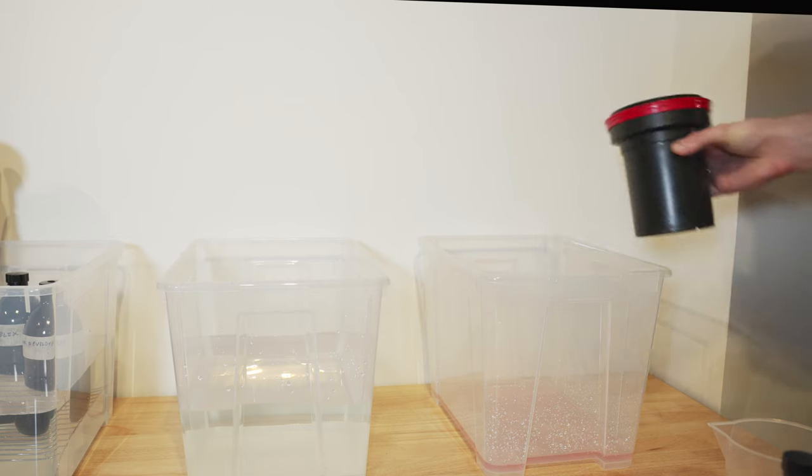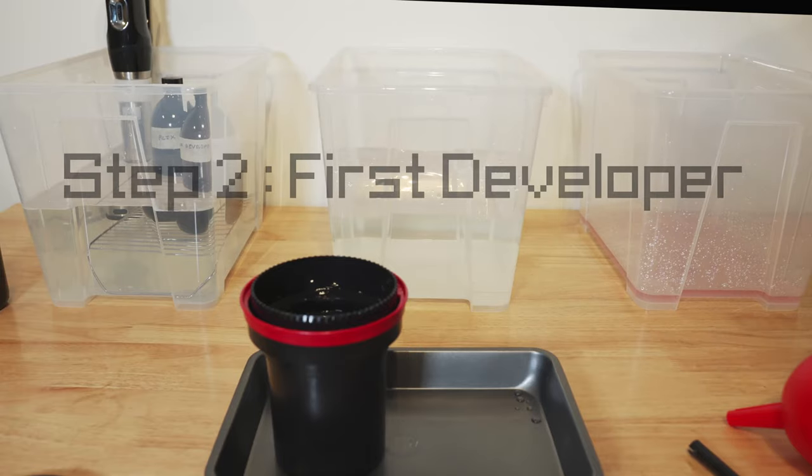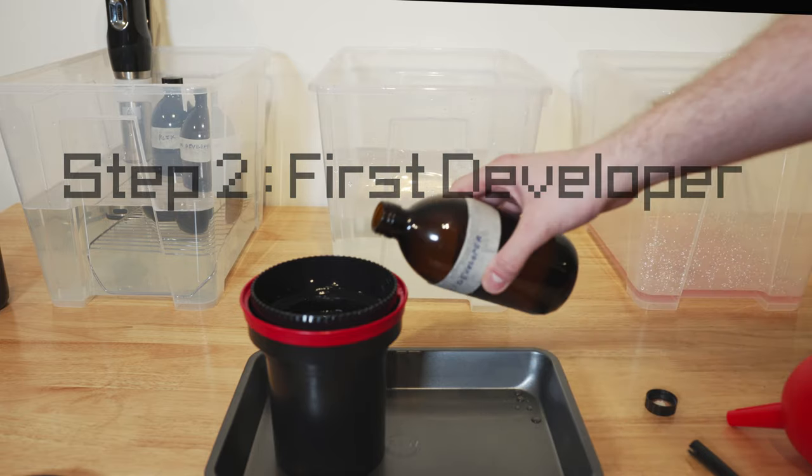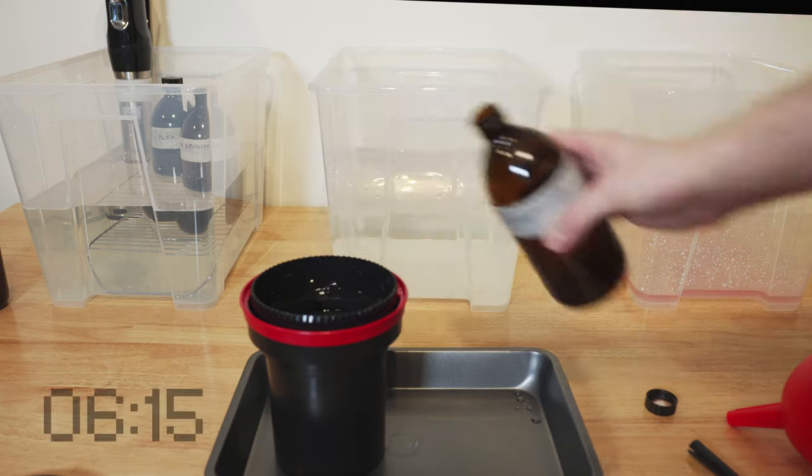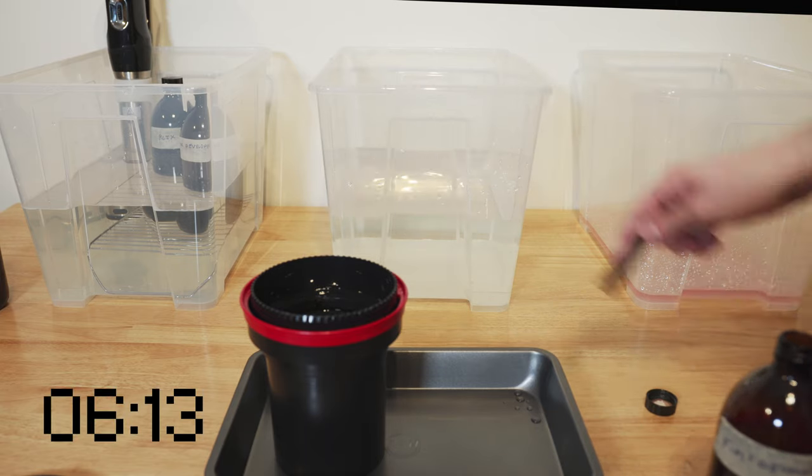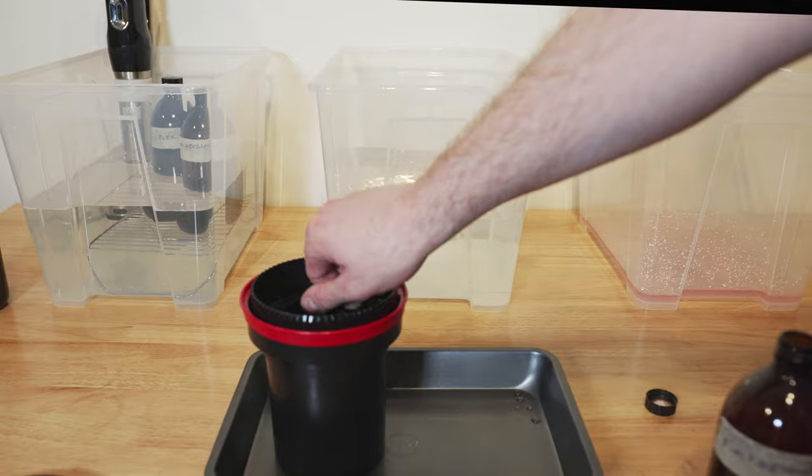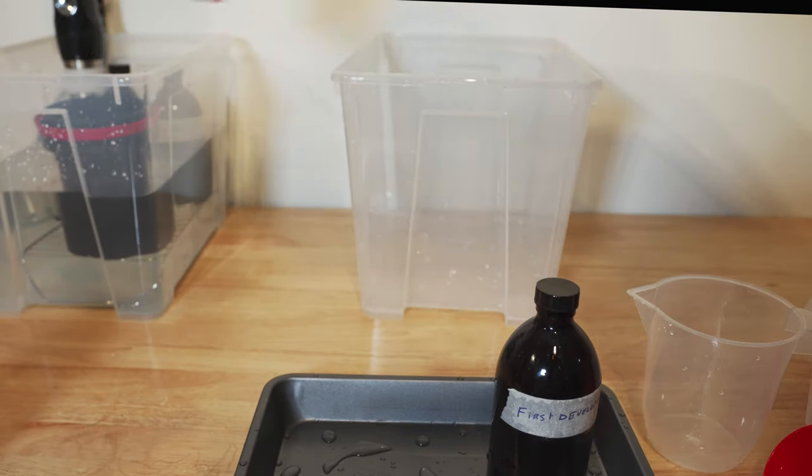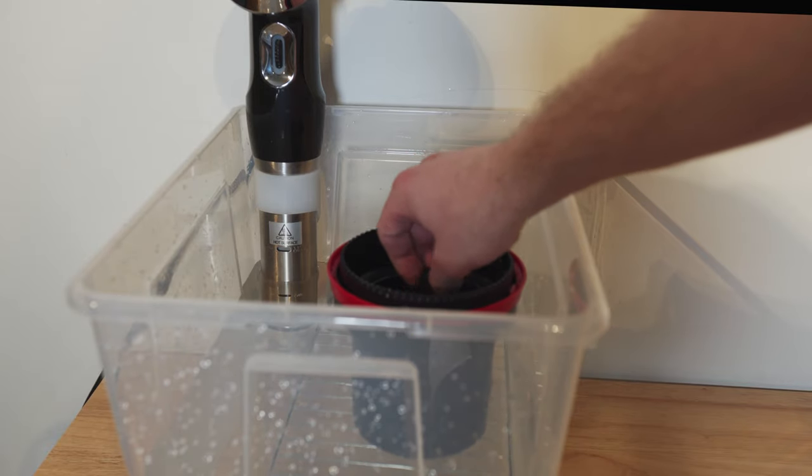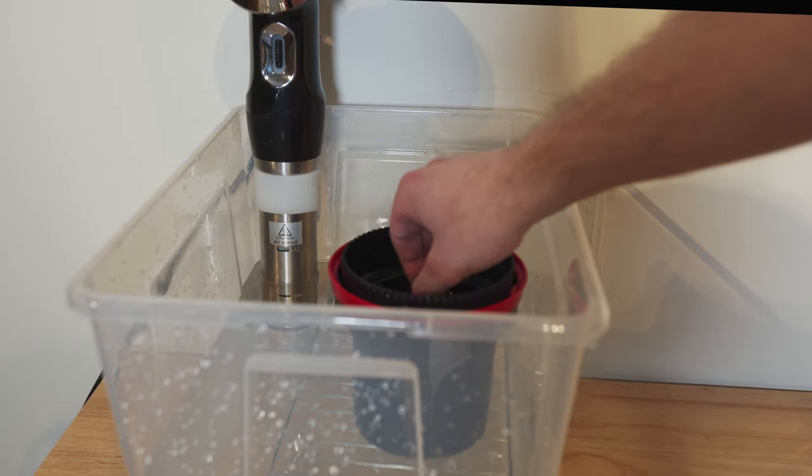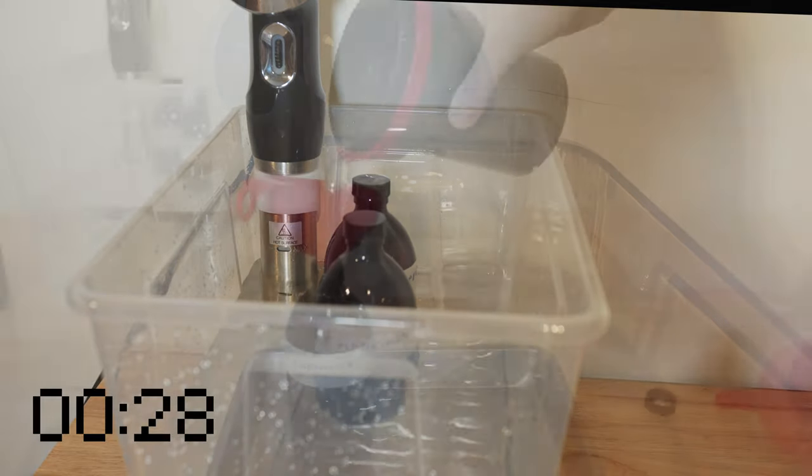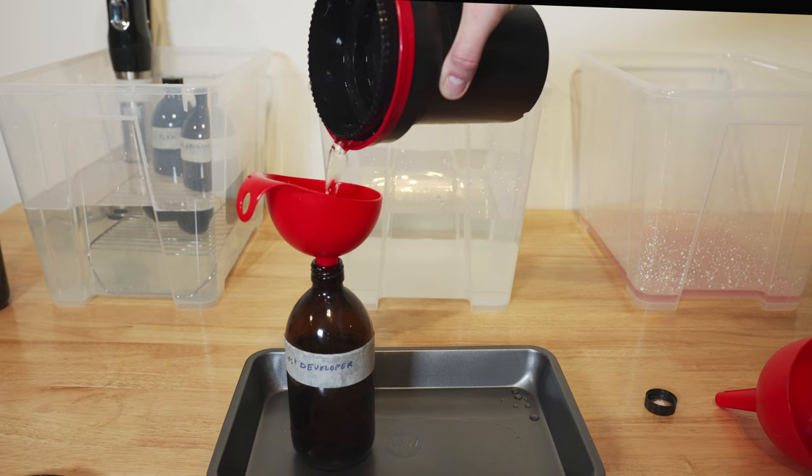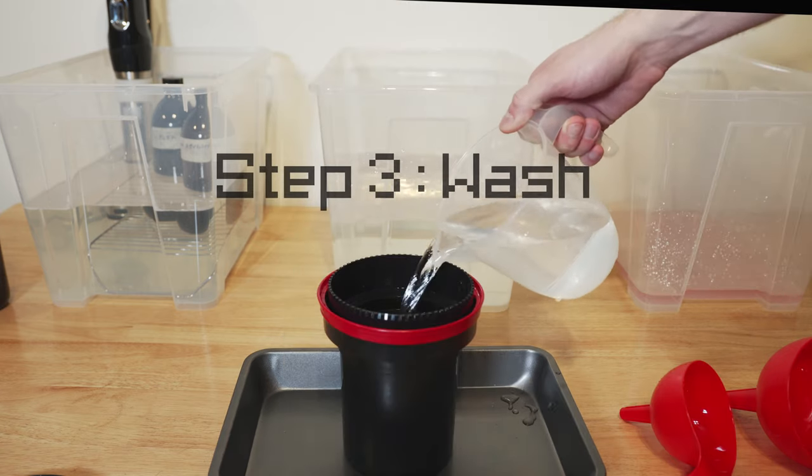After the pre-wash comes the first developer. We're just going to pour it straight into the tank. When we're finished pouring this, we'll start our timer for six minutes. I will then agitate the tank using the little stirring stick for about a minute. Once the minute is up, I move the tank into the water bath to control the temperature and I will agitate every minute for 10 seconds while the tank is in the water bath. When I have about 30 seconds left on the clock, I'll take the tank out of the water bath and then I will pour the first developer back into the bottle it came from for reuse.